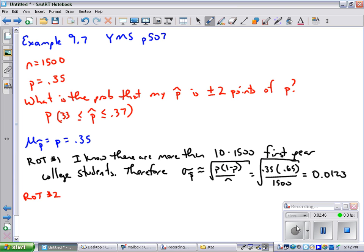Next, rule of thumb number 2 says it's okay to use the normal approximation as long as there's at least 10 successes and 10 failures. Well, if I have 1,500 college students and 35 percent of them are going to answer to the affirmative, is that more than 10? Yes, of course it is.